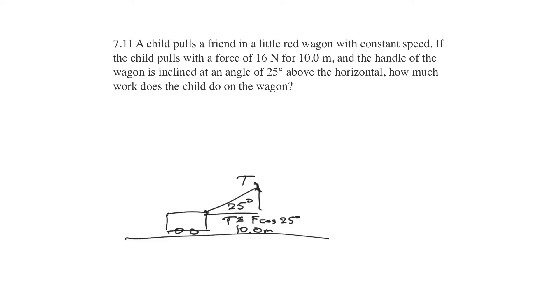So we know that work equals force times displacement, or force through a displacement. Okay, your work is going to be equal to, in this case, F times the cosine of 25 degrees times your displacement, which is 10.